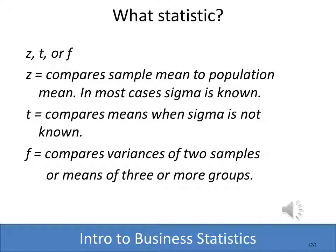We use the Z when we know the population standard deviation. We use the T when we're comparing means and we don't know the population standard deviation. We're going to use the F to compare the variances of two samples or compare the means of three or more population groups, and that will make more sense as we get going.